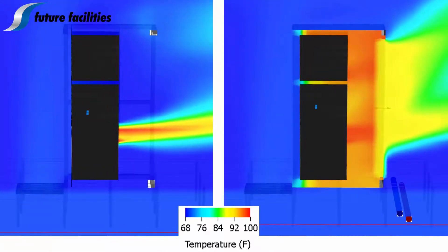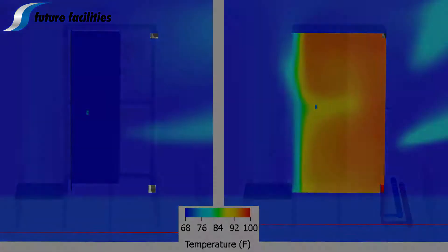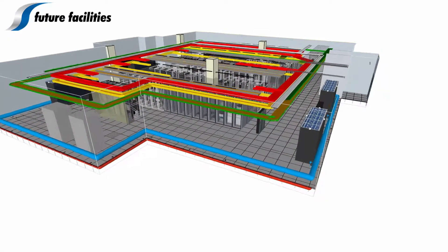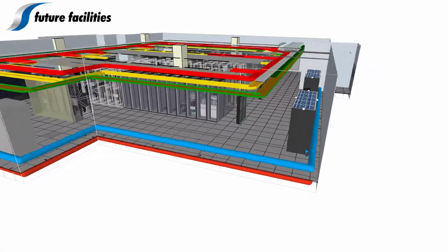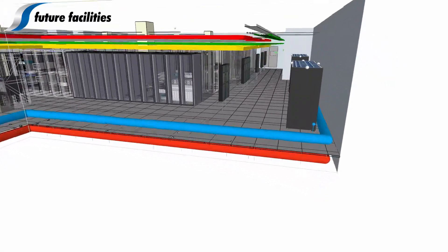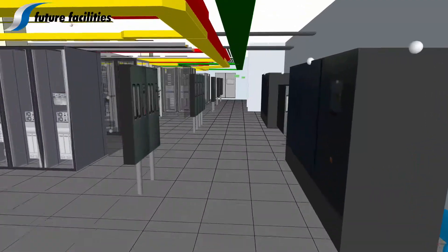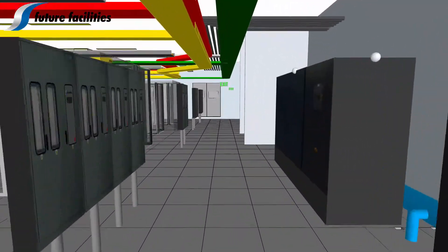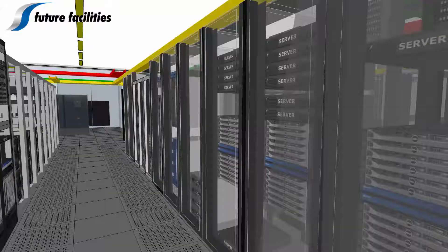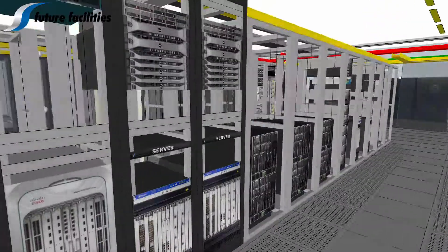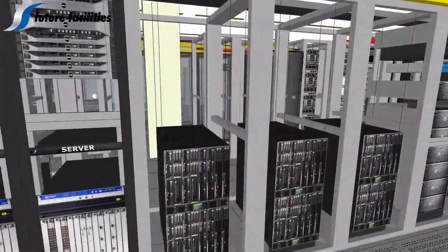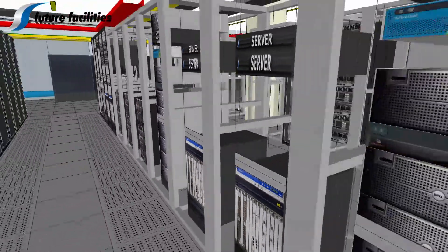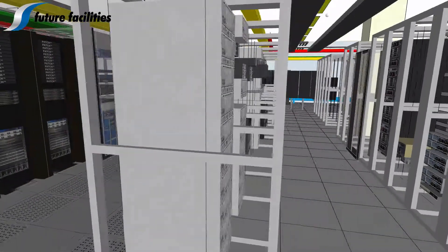The cabinets and the data center are inherently linked and the true performance of the rear door heat exchangers can only be judged using engineering simulation. The model captures all details necessary for an accurate analysis. This includes but is not limited to cabinets, floor grills, underfloor obstructions, room geometry, and the IT configuration.